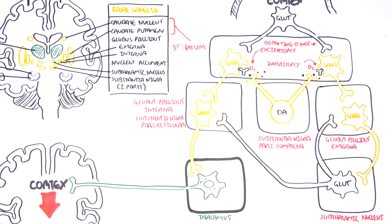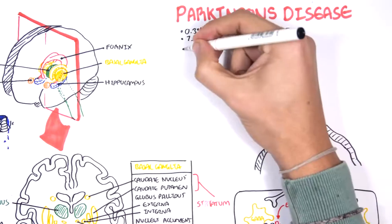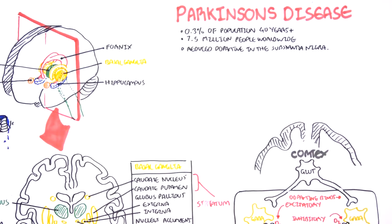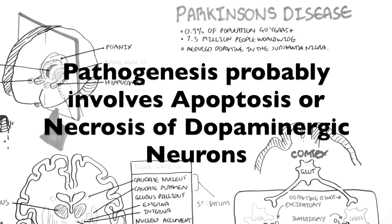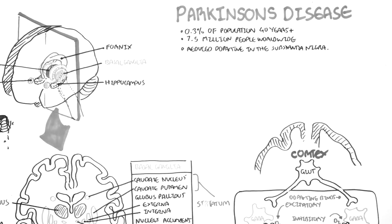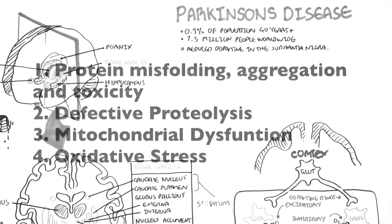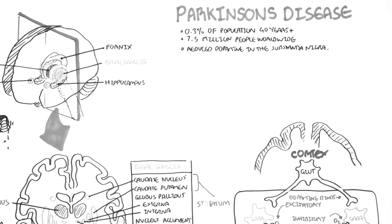That is what occurs normally. But in Parkinson's disease, there is not much dopamine — the dopaminergic neurons die. In Parkinson's disease you have reduced dopamine in the substantia nigra. The pathogenesis probably involves apoptosis or necrosis of dopaminergic neurons, and can be due to protein misfolding and aggregation and toxicity, defective proteolysis, or mitochondrial dysfunction and oxidative stress. These are all theories, but regardless of the cause, the result is reduced dopamine in the basal ganglia.